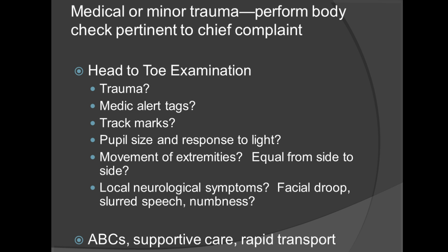Movement of extremities, equal from side to side — you'll be looking for that with stroke patients. Have them put their arms out and see if they can keep them equal for a prolonged period of time. That goes hand in hand with local neurological symptoms such as facial droop, slurred speech, and numbness. The most important thing when you find all of these are airway, breathing, circulation, supportive care, and rapid transport. This concludes Lesson 4-4, Altered Level of Consciousness. Thank you for your time.